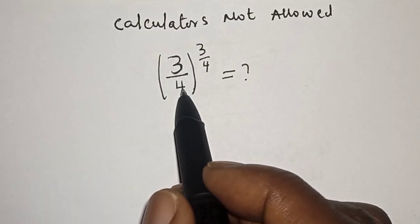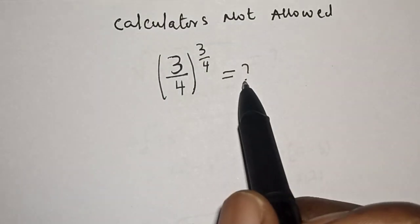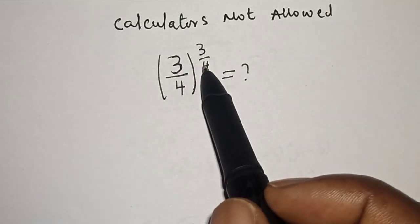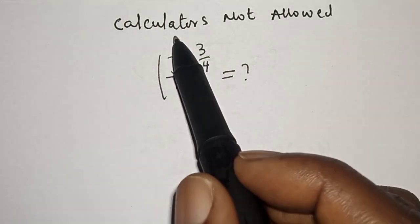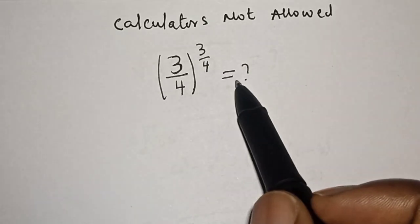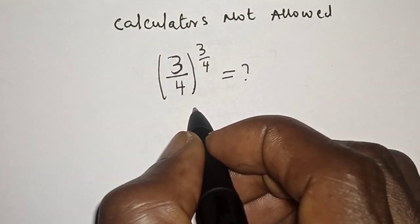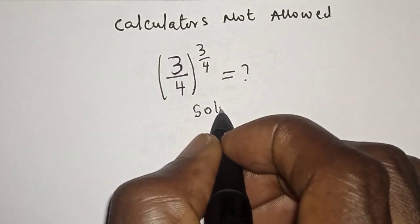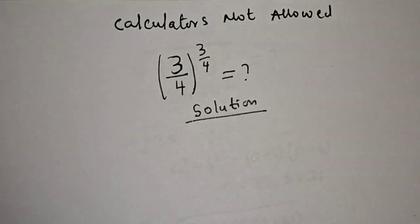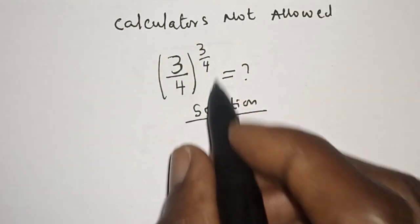3 divided by 4, all raised to the power 3 over 4, is equal to what? Hi everyone, welcome to my class. In this class we want to simplify this math problem. Remember, calculators are not allowed. But before we proceed, please don't forget to like, share, comment and subscribe.